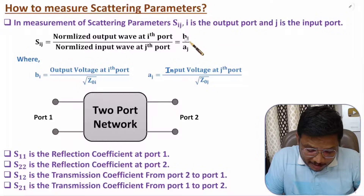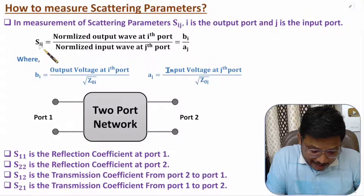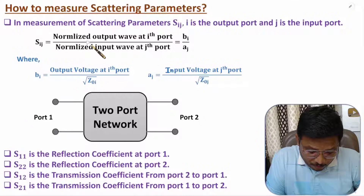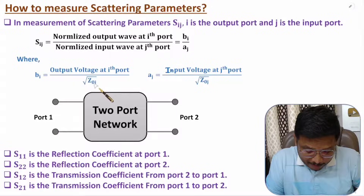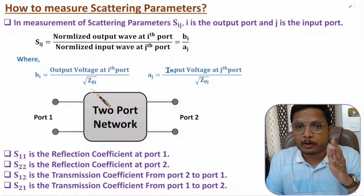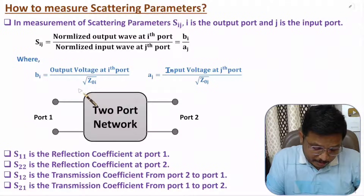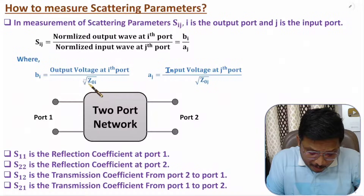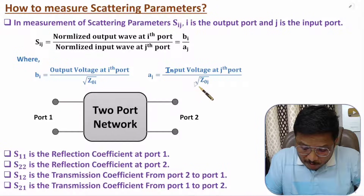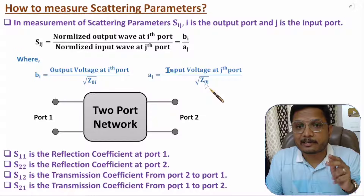To be more precise: if output has notation B and input has notation A, then S_IJ equals B_I divided by A_J, where B_I is the output wave and A_J is the input wave. These are normalized waves. B_I equals the output voltage at the Ith port divided by the square root of Z₀_I, where Z₀_I is the characteristic impedance at the Ith port. Similarly, A_J equals the input voltage at the Jth port divided by the square root of Z₀_J, the characteristic impedance at the Jth port.